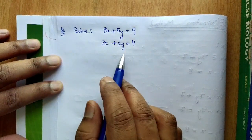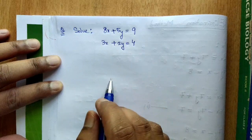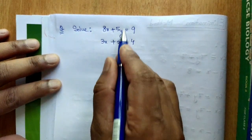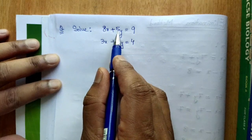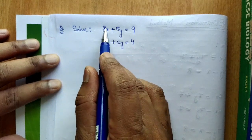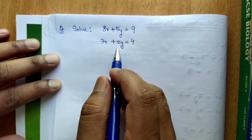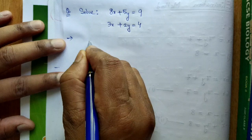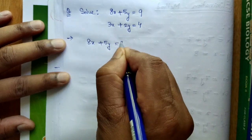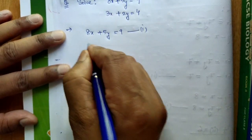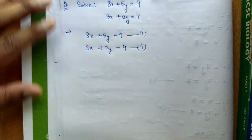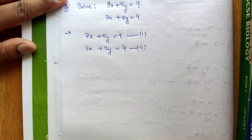Now I'm going to take one more question, in which I will use subtraction to eliminate the term. The equations are already arranged with X and Y terms on the left and constants on the right. So 8x plus 5y equals 9 becomes Equation 1, and 3x plus 2y equals 4 becomes Equation 2.